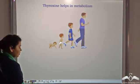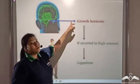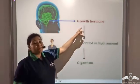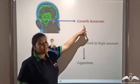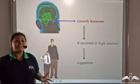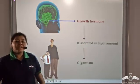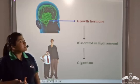The pituitary gland secretes another hormone known as the growth hormone, which causes an increase in cell division and hence growth.